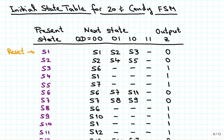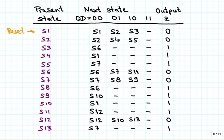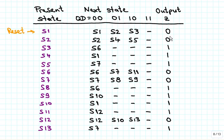Here is the initial state table for the 20-cent candy finite state machine. We have the present state — altogether 13 states, S1 through S13. State S1 is the reset state. From state S1 we can either stay in S1 when no coins are deposited, go into state S2 if we deposit a dime, or state S3 if we deposit a quarter. In each of those cases the output is still 0, because we haven't deposited enough for the candy to dispense.